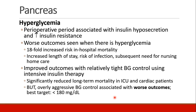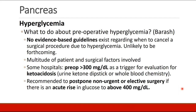On the other hand, relatively tight blood glucose control has shown improved outcomes when using intensive insulin therapy. This is especially true to reduce long-term mortality in ICU and cardiac patients, but we need to be careful because overly aggressive blood glucose control is associated with worse outcomes. For that reason, we usually set our blood glucose target as below 180 milligrams per deciliter.